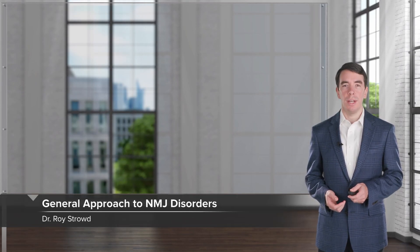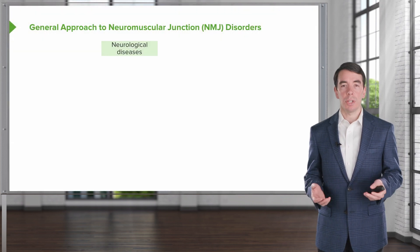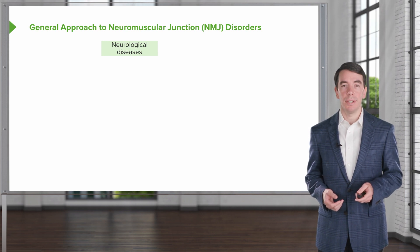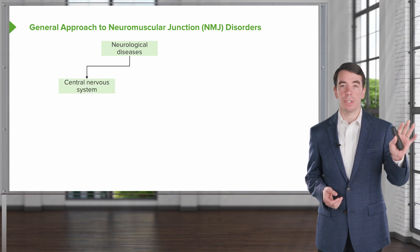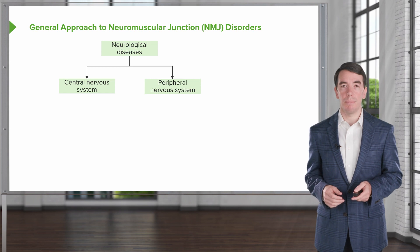In this lecture, we're going to talk about neuromuscular junction disorders, a neat group of disorders that are really important to understand for both patients and when answering clinical vignettes. As you recall, whenever we're evaluating anyone who presents with some type of neurologic complaint, we break it down. And the first thing we have to figure out is whether this is a central nervous system problem or a peripheral nervous system problem.